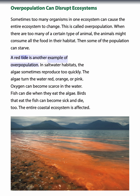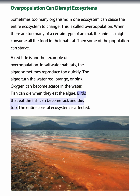A red tide is another example of overpopulation. In saltwater habitats, algae sometimes reproduce too quickly, turning the water red, orange, or pink. Oxygen can become scarce in the water. Fish can die when they eat the algae, and birds that eat the fish can become sick and die too. The entire coastal ecosystem is affected.